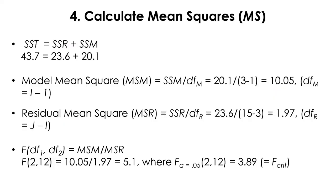Now we need to calculate the mean squares. The model mean square is the model sum of squares divided by the model degrees of freedom. With three groups, that is 3 minus 1 equals 2, giving a model mean square of 10.05. The residual mean square is the residual sum of squares of 23.6 divided by the residual degrees of freedom, which is 15 total subjects minus 3 groups equals 12, giving approximately 2. So the F-value will be about 5.